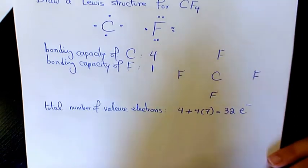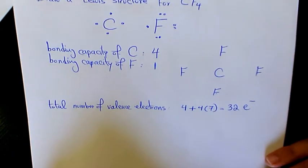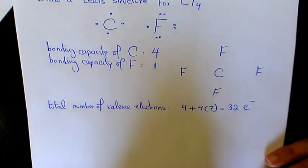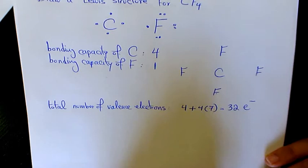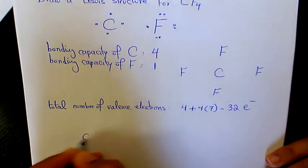Now we need to place a pair of electrons between each adjacent pair of atoms. Every two dots represents a bonding electron pair that forms a single covalent bond. So we place one bonding pair between carbon and each of the four fluorine atoms.